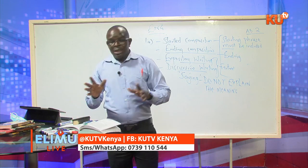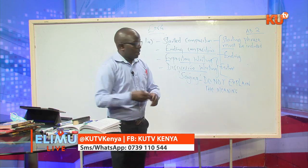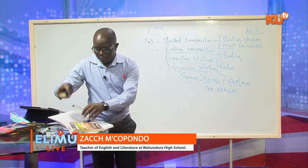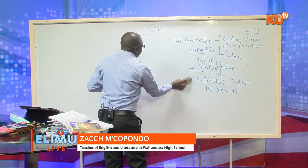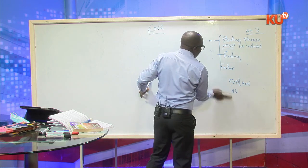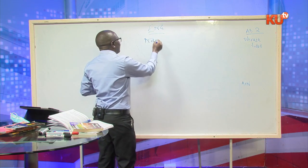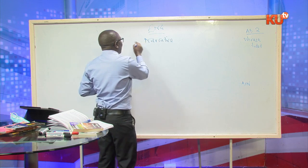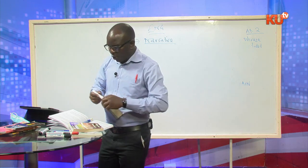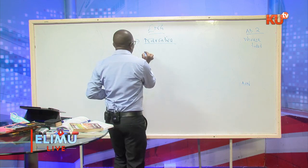I want to take you through the steps to imaginative writing. There are various types of imaginative writings. The first one is the narrative. In narrative format, you've been given a started composition and you continue with it — you simply just do a narrative. This is where you continue with that story and narrate what is happening.